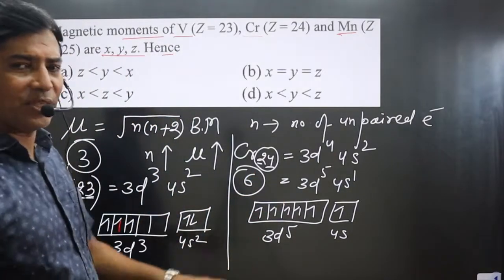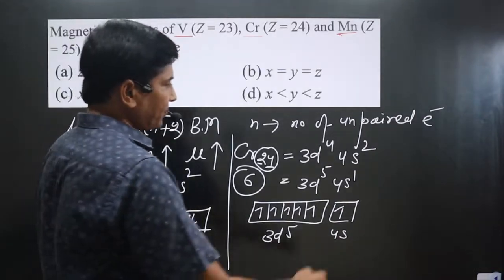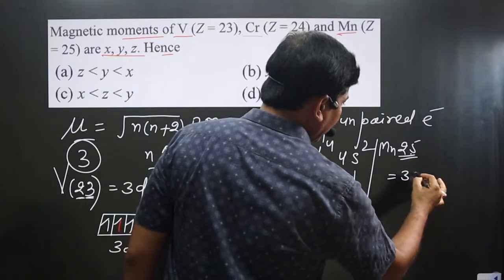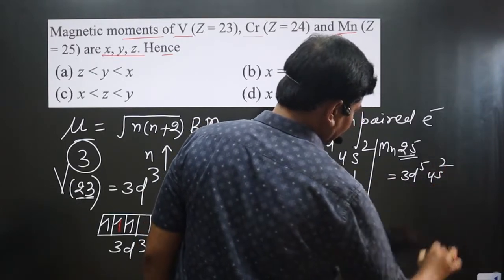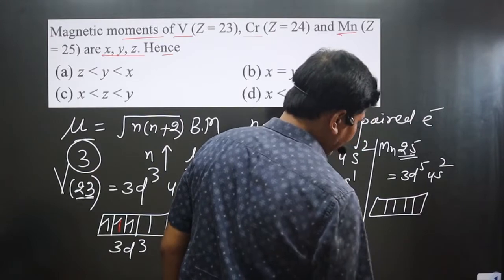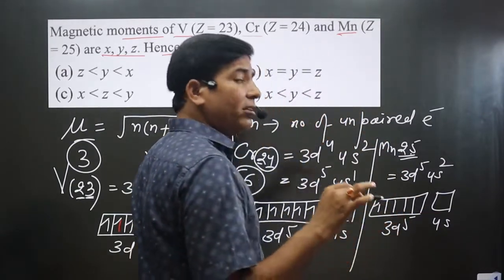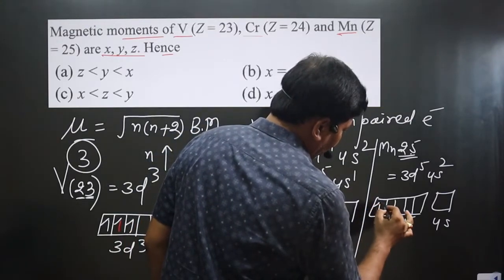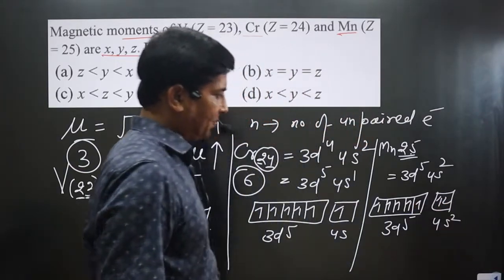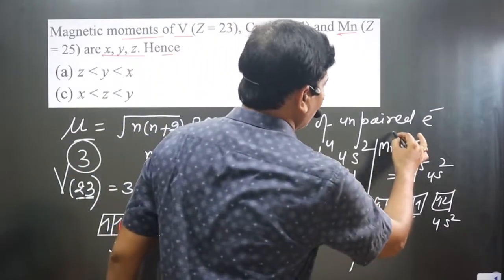Chromium has maximum unpaired electrons — no element beyond this can have more than 6 in this series. For manganese (atomic number 25), the configuration is 3d⁵ 4s². Drawing the orbital notation with 5 orbitals in d subshell, following Hund's rule, each d orbital gets one electron. The 4s² is completely filled, giving 5 unpaired electrons total.